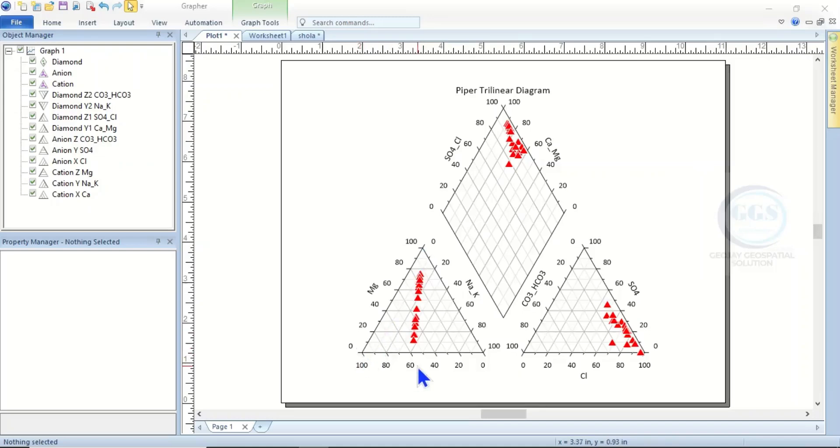Then this corner is for calcium. Calcium is at 100 here and zero here. Likewise, sodium-potassium is at zero here and 100 here. Which means as you're moving away from,